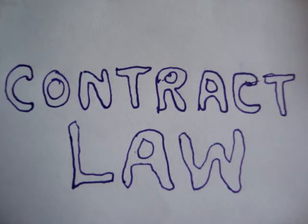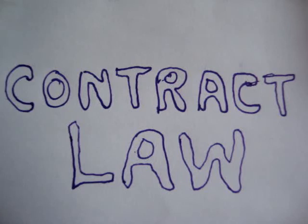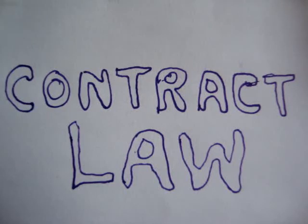Part C: the Doctrine of Promissory Estoppel is a more expansive version of the Doctrine of Waiver, also known as equitable estoppel. The doctrine was first described by Denning J. in the controversial case of Central London Property Trust Ltd v. High Tree House Ltd, 1947. The outcome of this case was that the waiver would not apply to a promise to accept a partial payment as a full discharge of the obligation.